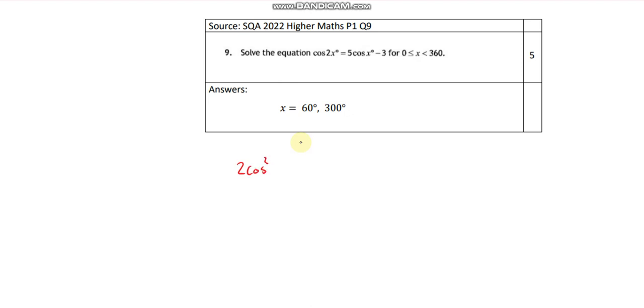So 2 cos squared x take away 1. So I've just rewritten this with the formula. And I'll write it with this one because I want to have just coses. I want just coses or just sines, I want one unknown.